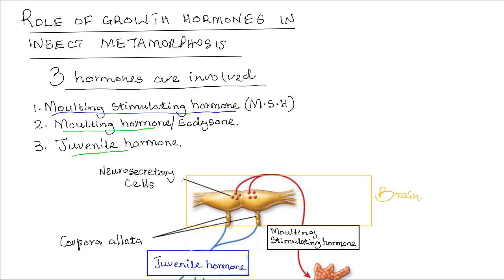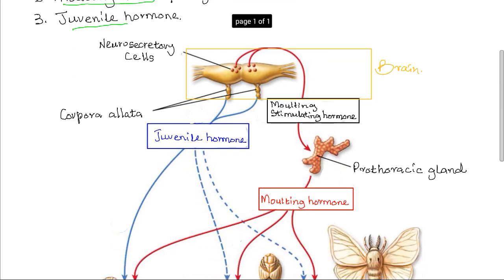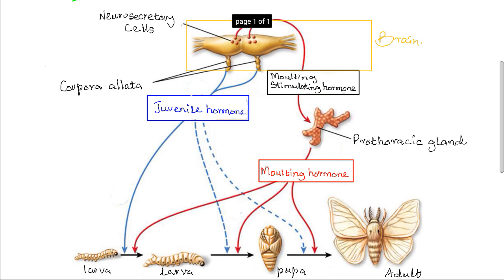The juvenile hormone brings about the formation and retention of the larval tissues, such as the thin cuticle, and it also inhibits metamorphosis, thus preventing the juvenile larva from developing into the adult stage. In this illustration, you can see the interaction and control of insect metamorphosis by the various hormones.